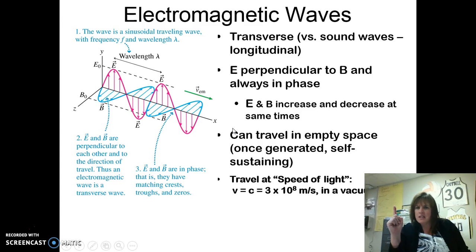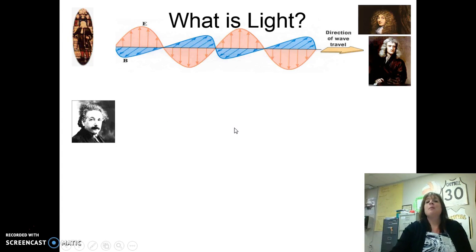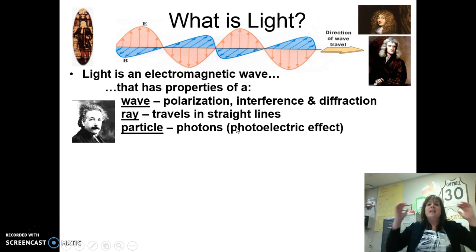Wait, light travels at three times ten to the eighth meters per second. Holy cow! Light is an electromagnetic wave! Now, totally mind-blown, right? So light is the oscillation of electric and magnetic fields.